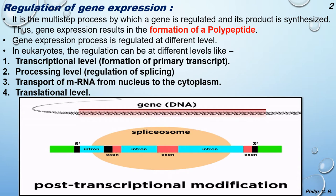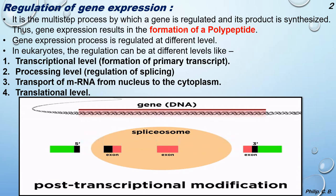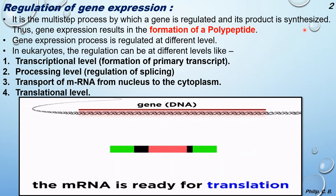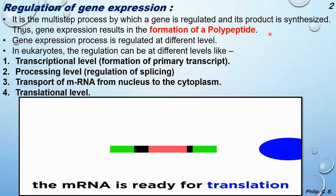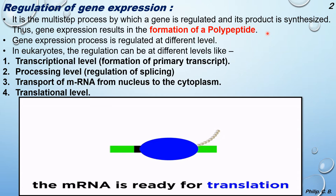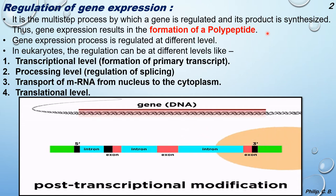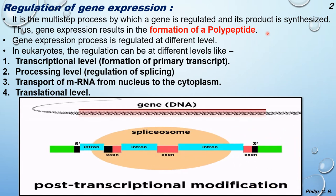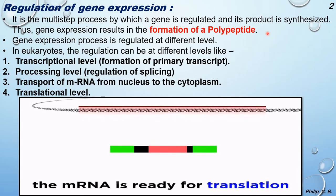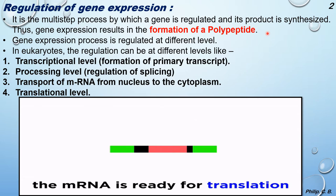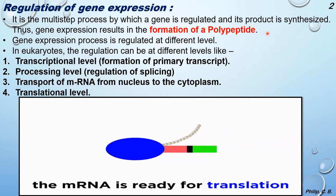Regulation of gene expression is a multi-step process by which a gene is regulated and its product is synthesized. Gene expression results in the formation of a polypeptide. This is a continuation of what we learned earlier about protein synthesis, transcription, and translation — the gene expression which results in the formation of a polypeptide or product.